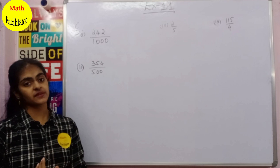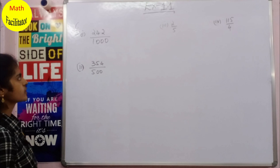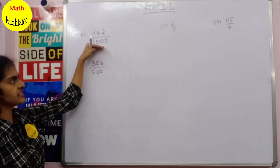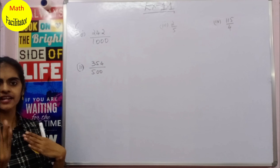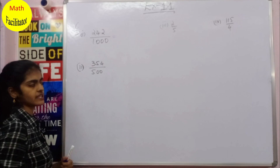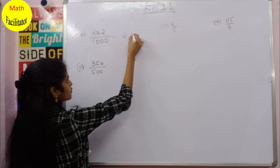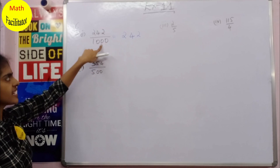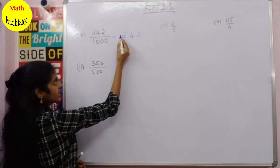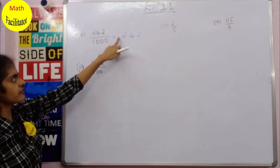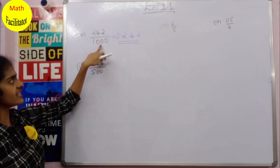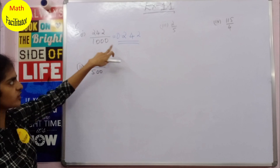In this question you have to express these rational numbers as decimals. In the first part you have 242 divided by 1000. Whenever you have multiples of 10 in the denominator you can directly convert it into decimals without even dividing. You write the numerator as it is — 242 — then count the zeros in the denominator: 1, 2, 3. So you count 3 places from the right and put a decimal point. Before the decimal point you don't have any number, so you write 0. So 242/1000 = 0.242.